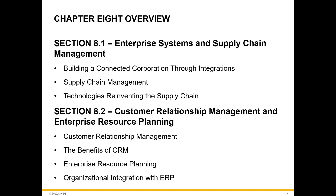This chapter is divided into two sections. In section 8.1, we will be discussing enterprise systems and supply chain management. And in section 8.2, customer relationship management and enterprise resource planning are going to be covered.